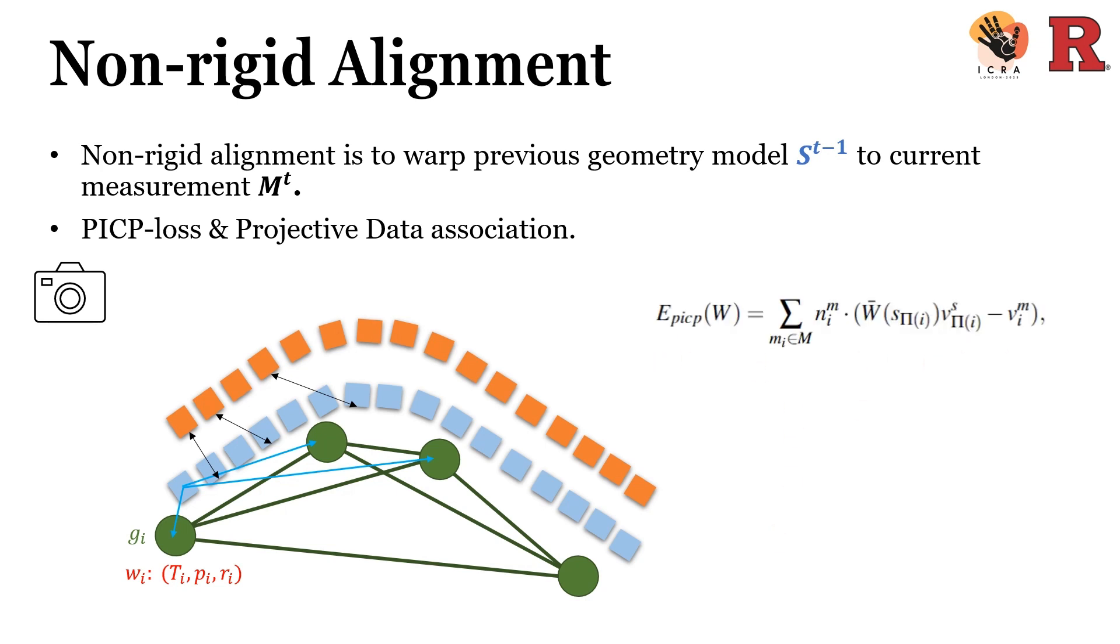The formula is written on the right side. V_S here is a point on the previous geometry. V_M here is a point on the current measurement.